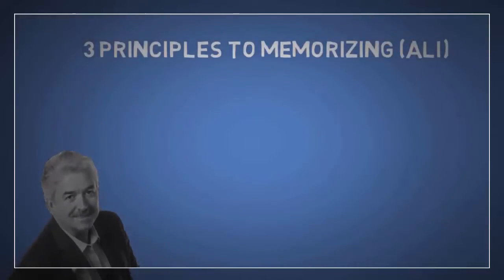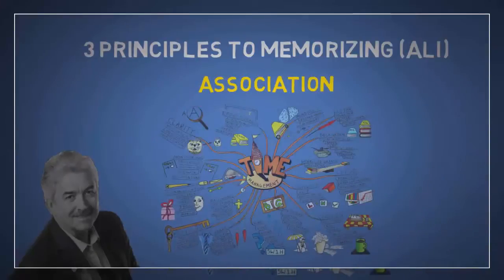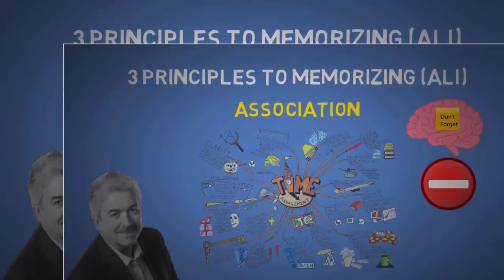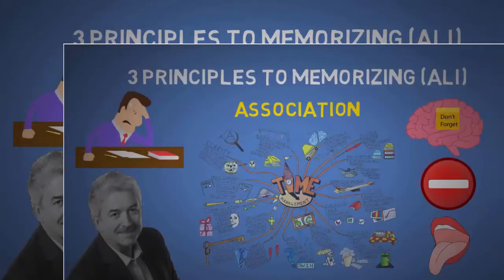First we'll cover the eight-time world memory champion Dominic O'Brien's three principles to memorizing. A is for association. We tend to naturally link things together, kind of like a mind map. Some say we never actually completely forget a memory, we simply lose the path to access it. I'm sure we've all experienced the tip of the tongue phenomenon. We know the answer is somewhere in our brain but we just can't access it.